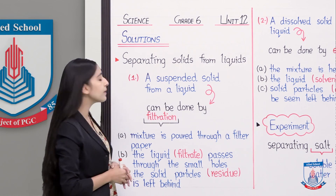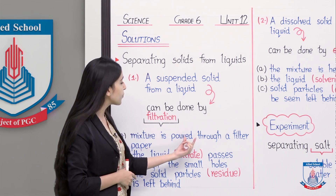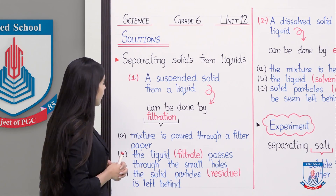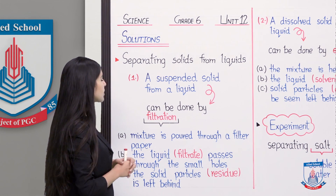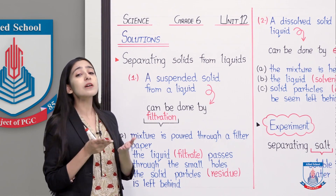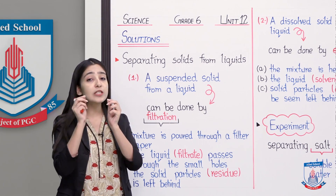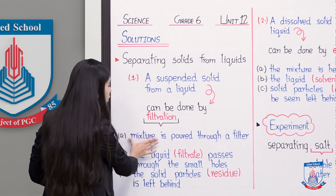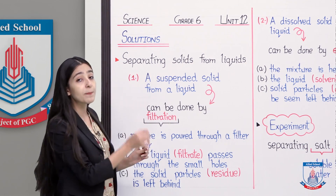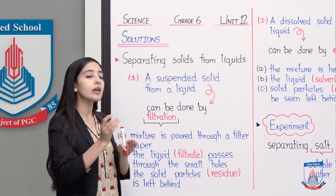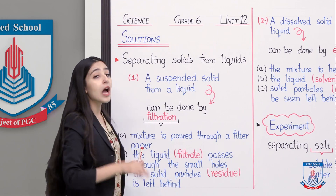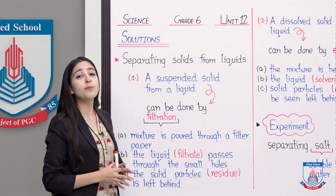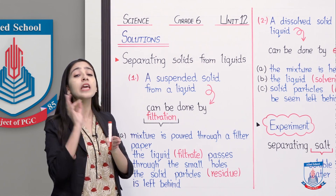Let's understand them. First step A: the mixture is poured through a filter paper. Step B: the liquid filtrate passes through the small holes of the filter paper. When we pour this mixture into the filter paper, the liquid passes through. I have written in red color 'filtrate'. We have named the liquid as solvent, but in the process of filtration, when the liquid separates out, we name it as filtrate. This word is derived from filtration.